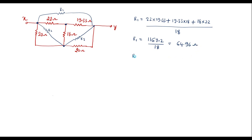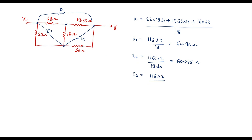Similarly, R2 will be equal to: numerator is the same, 1169.2, divided by the resistor opposite to R2, which is 19.33. That gives R2 equal to 60.486 ohm. Similarly, R3 equals 1169.2 divided by the resistor opposite to R3, which is 22, giving R3 equal to 53.145 ohm.